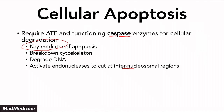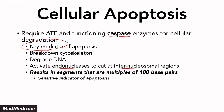Very high-yield: when it comes to cellular apoptosis and the activation of endonucleases, what you're going to end up with is a DNA degradation product that is 180 base pairs long. When you break down DNA during apoptosis, you get segments of DNA that are multiples of 180 base pairs. This is a sensitive indicator of apoptosis — if you see anything 180 base pairs long, it's probably talking about apoptosis, and this is an easy question you can get on any exam.